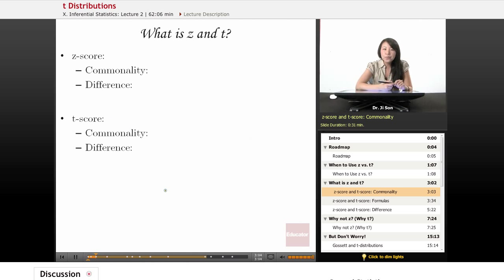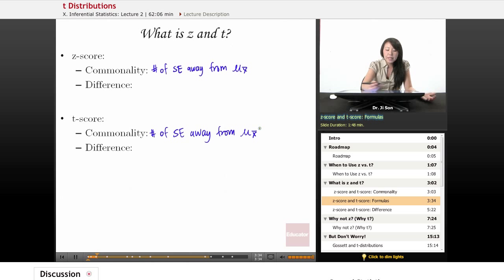So what is Z and T? Well, the commonality is, as we saw before, it tells us the number of standard error away from mu sub X-bar. That's common to both. And that's what the Z and T-score both have in common. And because of that, their formulas look very much the same.